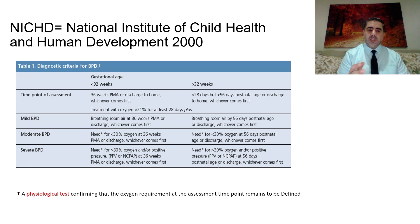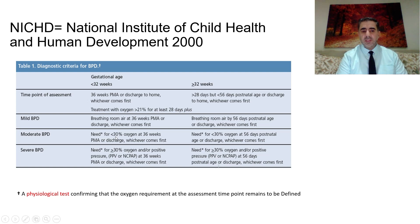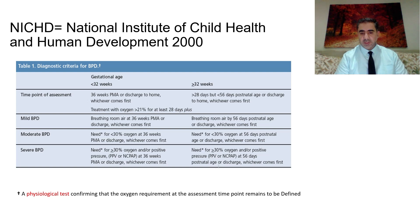The second criteria classifies patients into mild, moderate, and severe. For mild: the baby is breathing room air at 36 weeks for the first group, or by 56 days for the second group. The moderate group requires less than 30 percent oxygen at the point of assessment. The severe group requires greater than or equal to 30 percent oxygen and/or positive pressure ventilation at time of assessment.